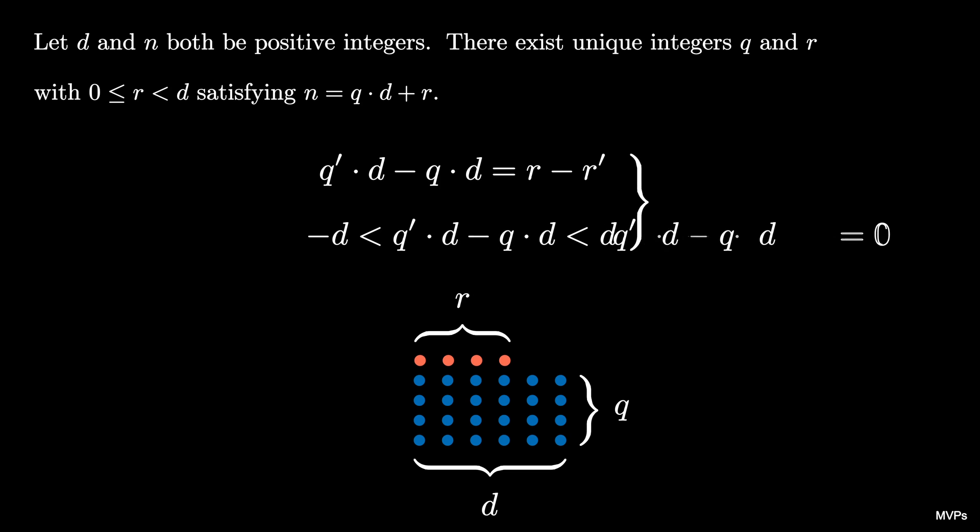From this we see that q prime times d minus q times d must be 0 and consequently that means r minus r prime must be 0.